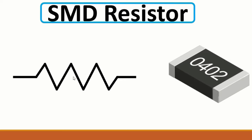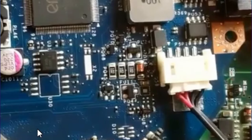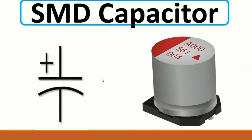Here we have the symbol for the resistor. As you can see here in the motherboard, we have SMD resistors. The second component is the SMD capacitor, and this is its symbol.